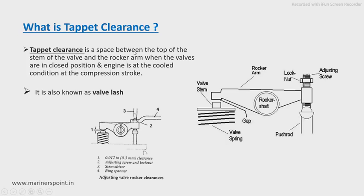Tappet clearance is the space between the top of the stem of the valve and the rocker arm when the valves are in closed position and the engine is at cold condition at the compression stroke. Here in this figure you can see the stem valve and the rocker arm, and the space between them is known as the tappet clearance.